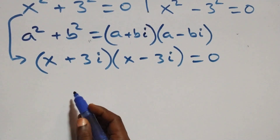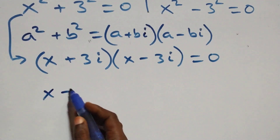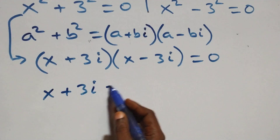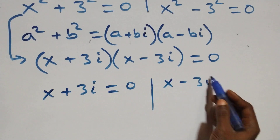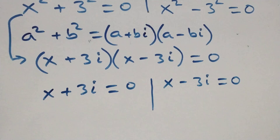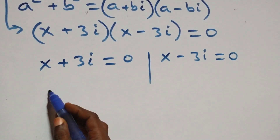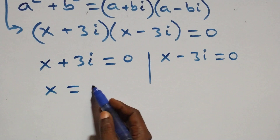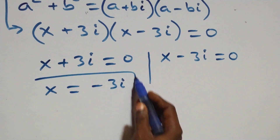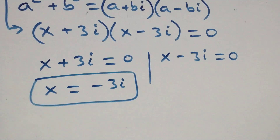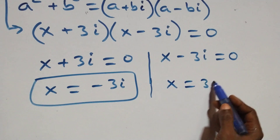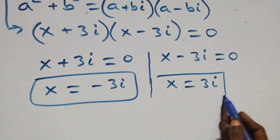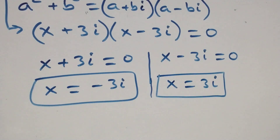At this, we have two possible cases: x + 3i = 0 or x − 3i = 0. Then solving, it becomes x = −3i, which is a complex solution, and x = 3i, which is also a complex solution. So we have two complex solutions.